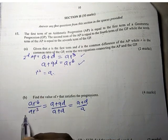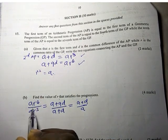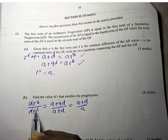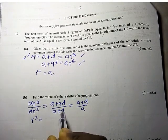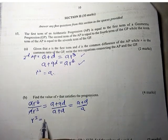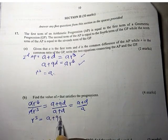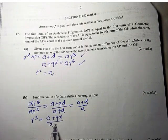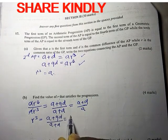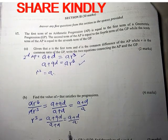This gives us R cubed equal to A plus 9D over A plus D, which equals A plus D over A.